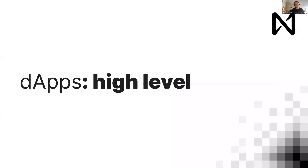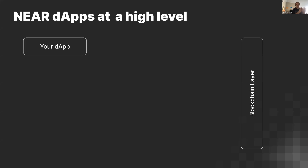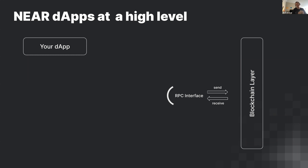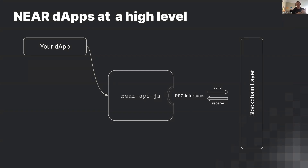Let's dive into decentralized applications at a high level. You've got your application and the NEAR Protocol blockchain. NEAR exposes an API called RPC — Remote Procedure Calls — that sends and receives JSON over HTTP. It's a bit of text you send over the wire just like a website, but using an API. It's not a REST API, because REST follows conventions that match CRUD operations in a relational database. The RPC API sends instructions like 'send a transaction' or 'get the status of a transaction.'